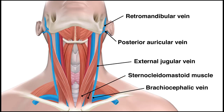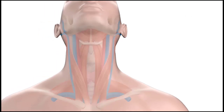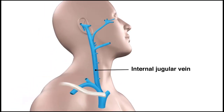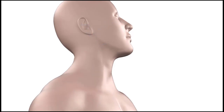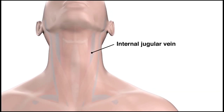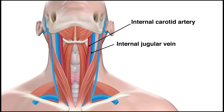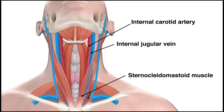Then the vein pierces the deep cervical fascia, posterior to the clavicular head of the sternocleidomastoid muscle, and drains into the subclavian vein. The internal jugular vein is formed by the convergence of the inferior petrosal sinus and the sigmoid durovenous sinus, which are in or just distal to the jugular foramen. In addition, the internal jugular vein descends alongside the internal carotid artery in the carotid sheath, and continues posteriorly to the space between the two heads of the sternocleidomastoid muscle.